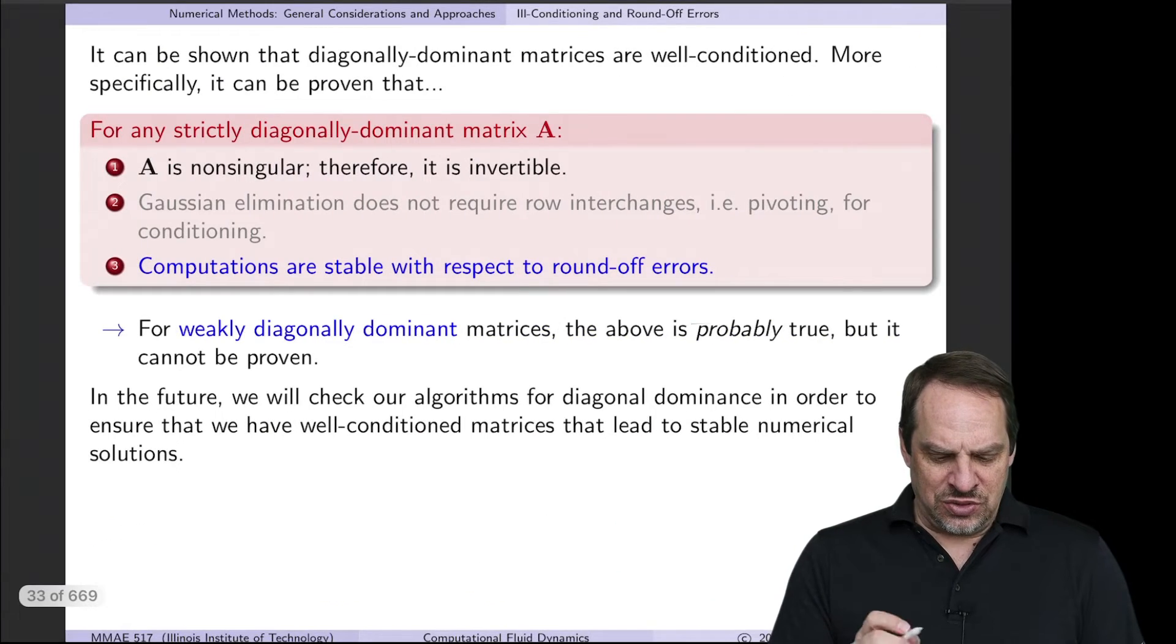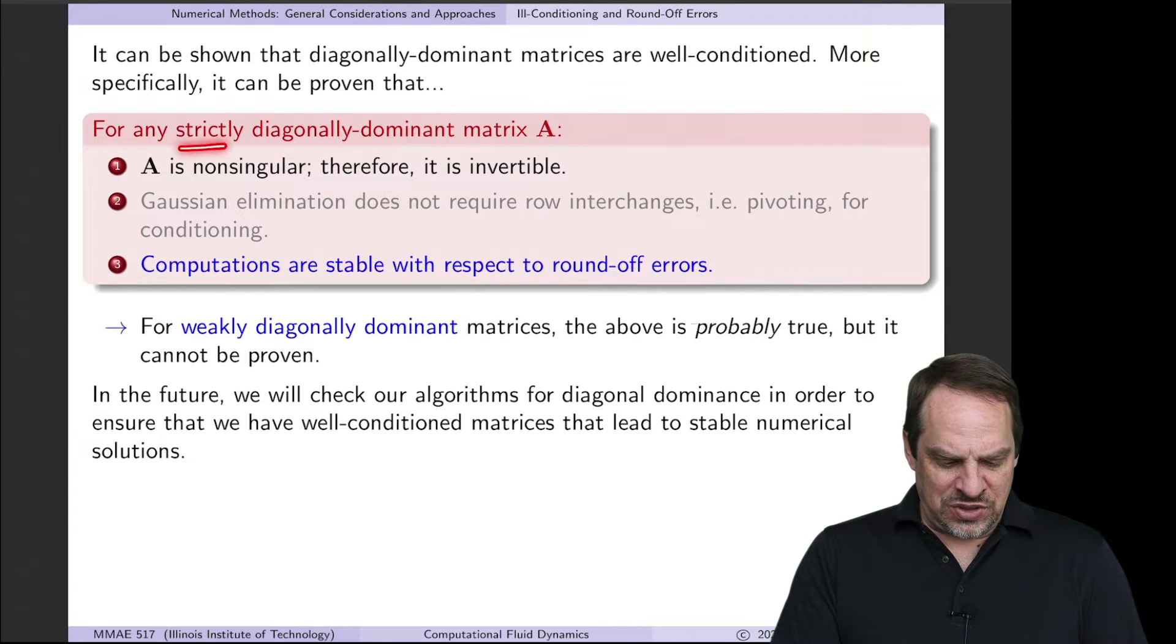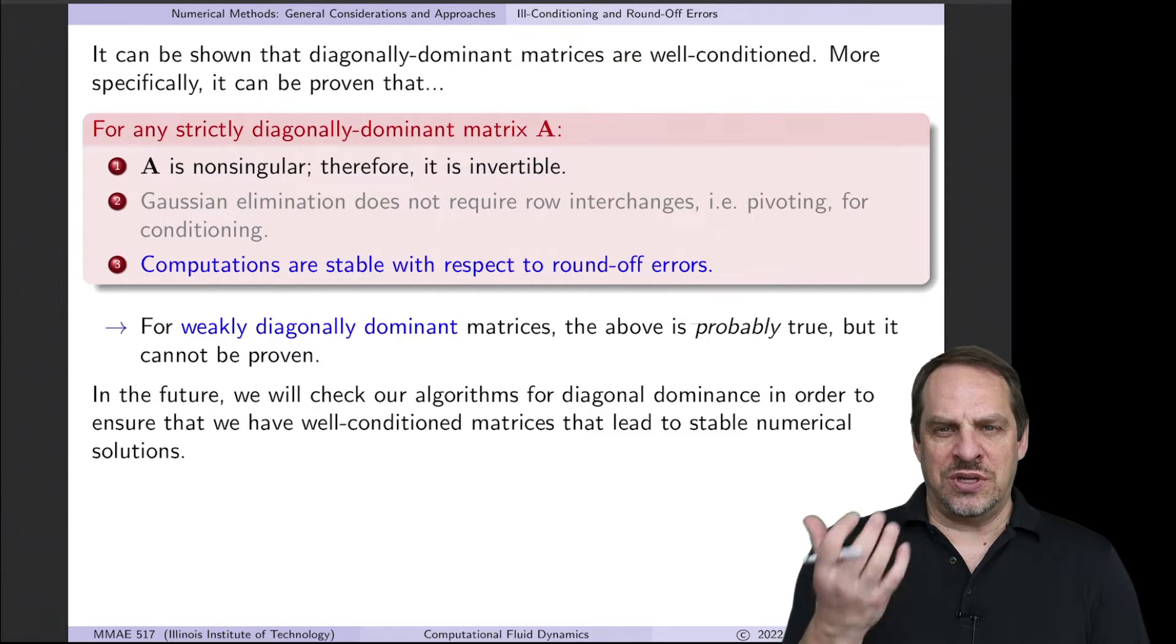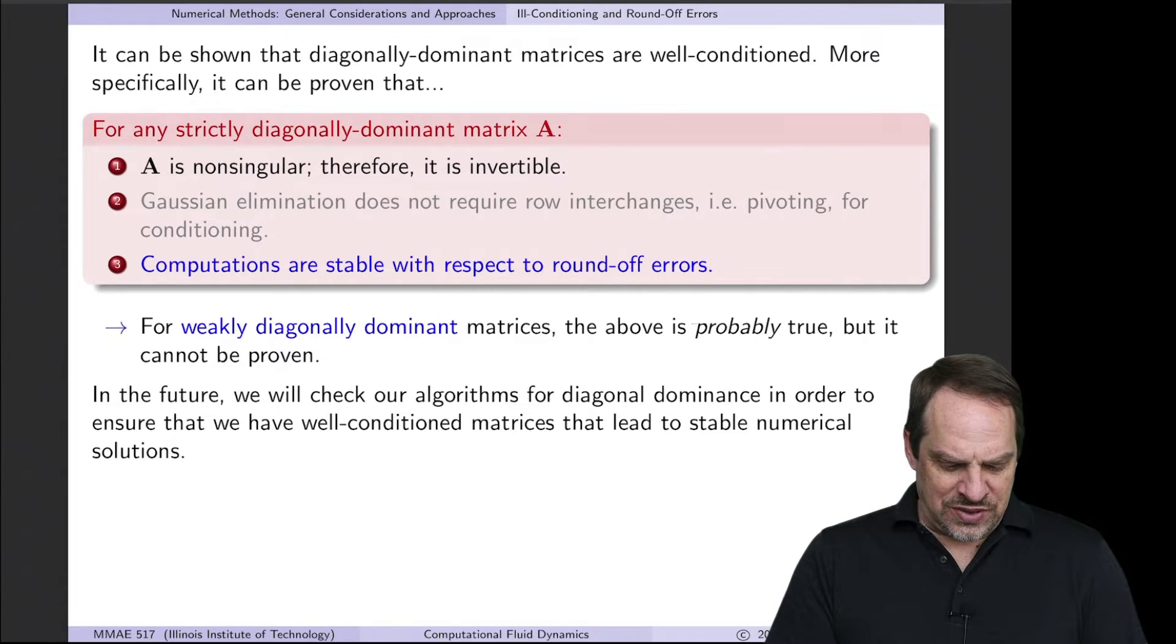Now what we can do is we can prove, I won't go through the proof, but we can prove that if it is strictly diagonally dominant, then these three things are true. The second one isn't terribly important for our discussion right now, so I won't emphasize it here. The first is that if it is strictly diagonally dominant, then A is non-singular, and therefore it is invertible. So its determinant is not equal to zero, it is invertible, and we can get a unique solution.